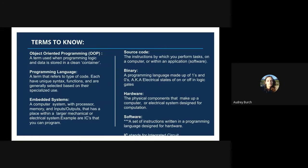An embedded system is a term for a computer system with a processor, memory, and inputs and outputs that can be programmed and is usually part of a larger mechanical or electrical system. A good example are something called ICs — that stands for integrated circuits — and they're small computer chips that can be programmed individually and embedded in larger mechanical or electrical systems.